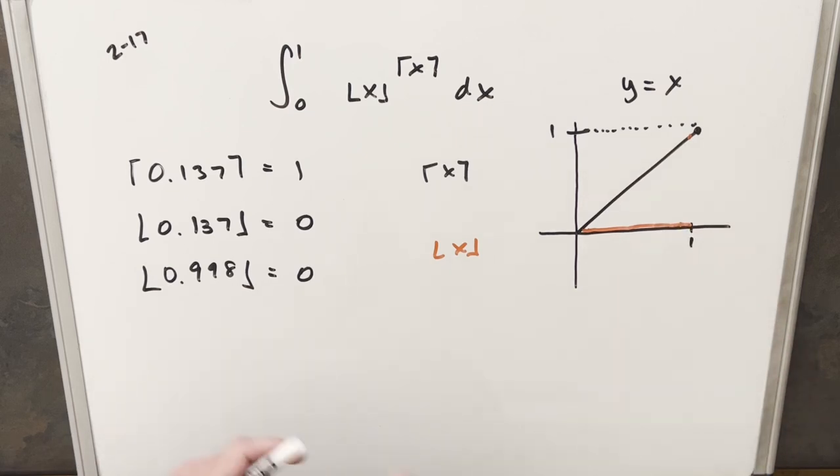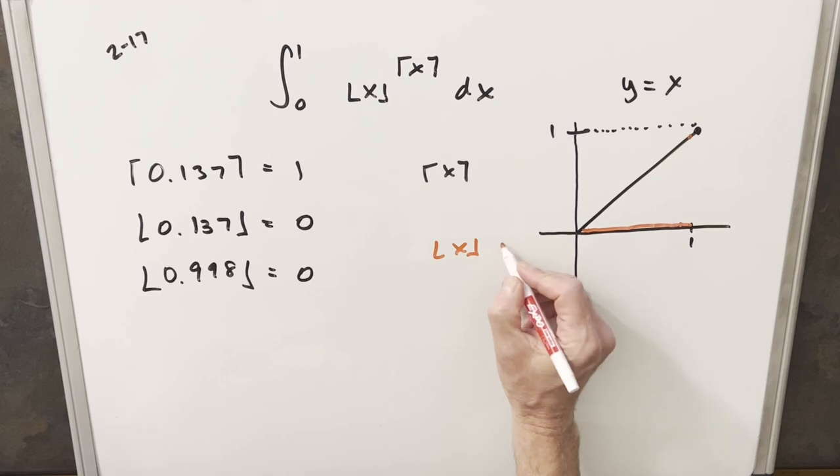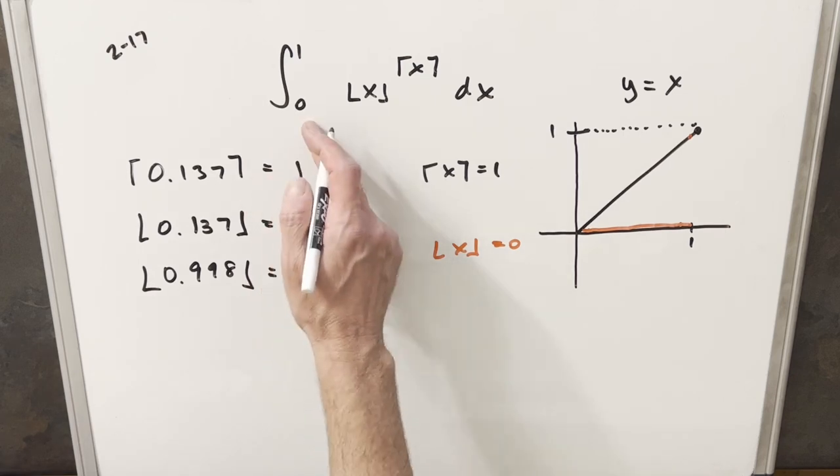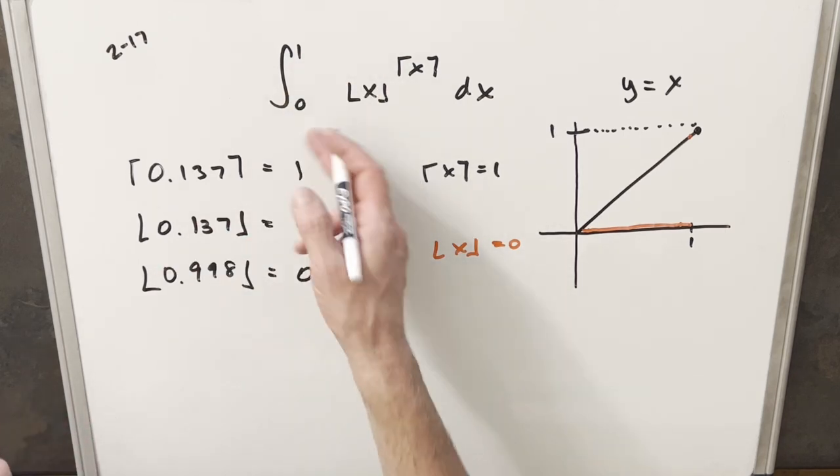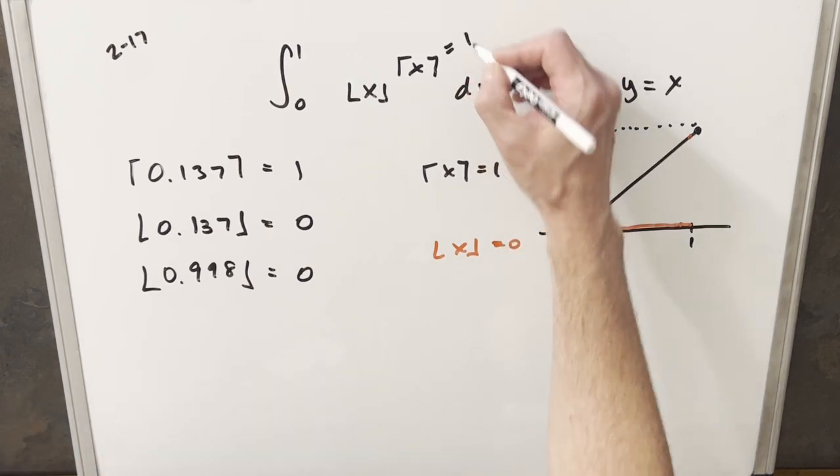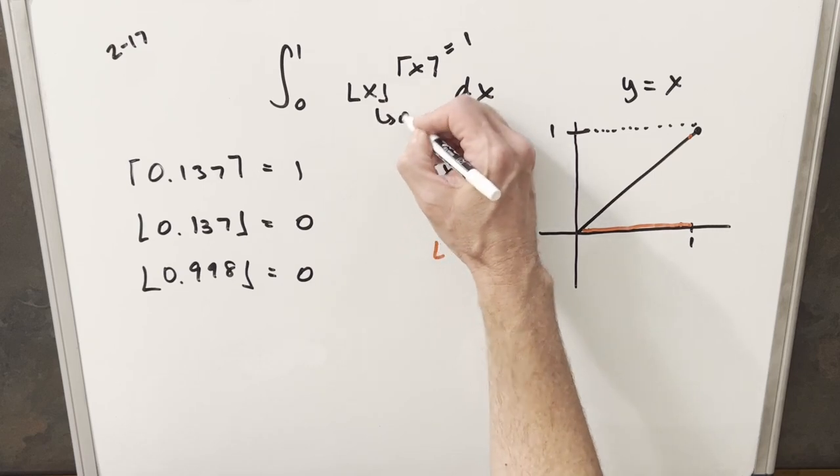This means it's actually going to be quite easy. Our floor of x is always 0, and our ceiling of x is always 1 within this range. They made it easy by just going from 0 to 1. We can plug this in: we'll have 1 here, and the floor value is 0.